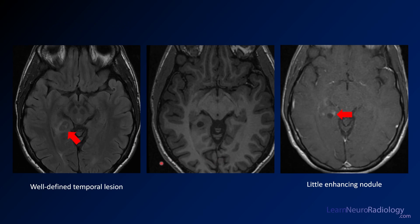Looking at the axial images from the first slide, you have this posterior temporal lobe lesion in the medial temporal lobe. It's pretty well-defined with a little bit of T2 and FLAIR hyperintensity around it. On the pre-contrast T1 you see a well-defined cystic portion, and when you give contrast, there's a little bit of an enhancing nodule along the medial margin.